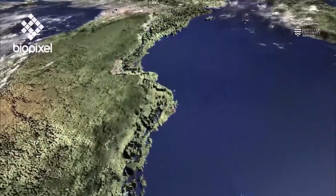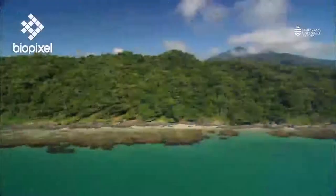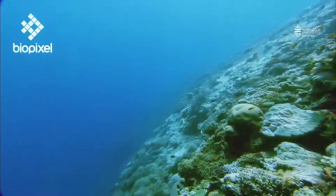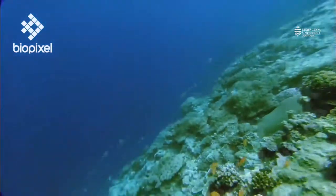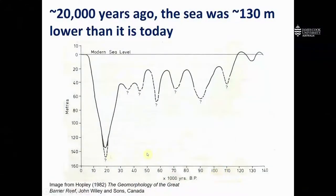Another thing to keep in mind is that the height of the ocean also changes over time. About 20,000 years ago, the sea was 130 metres lower than it is today. You can see this fluctuating height of sea level over time in this graph here. On the x-axis, we have time in thousands of years before present. And on the y-axis, we have the height of the sea. Zero here means that the sea is at the same height as it is today.